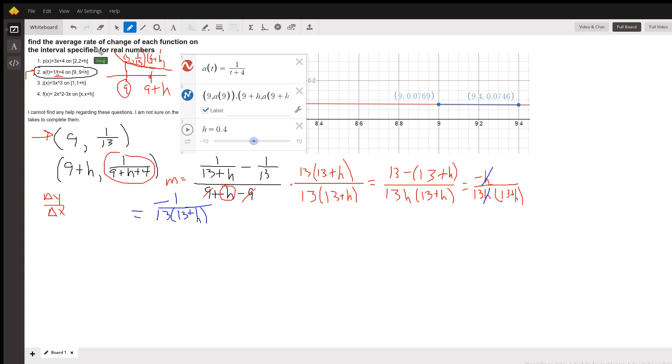Right now, you're just setting up the average rate of change, which is the same as saying find the slope of the secant line, which this is a typical secant line right here, where h is this real small 0.4. So I've gone from 9 to 9.4, and then I've substituted those values into the function to get the corresponding y values.